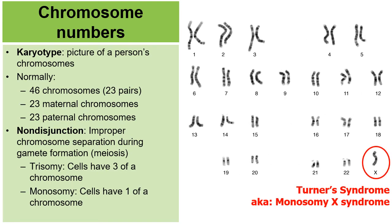There are also nondisjunction disorders called monosomy disorders, where the cells have only one of a chromosome when they should have two. Turner syndrome, also called monosomy X syndrome, is a great example of this, where sufferers only possess one of the X chromosomes. So let's try to see how this happens.